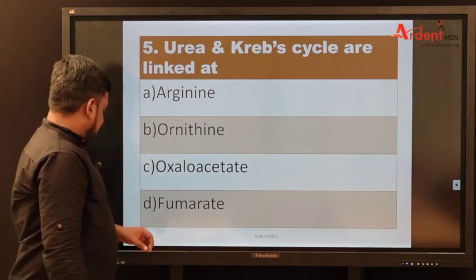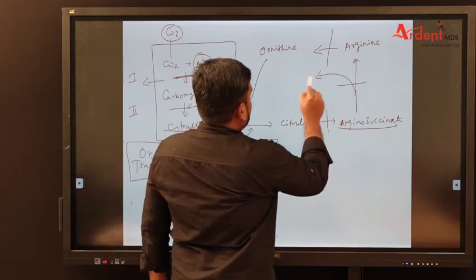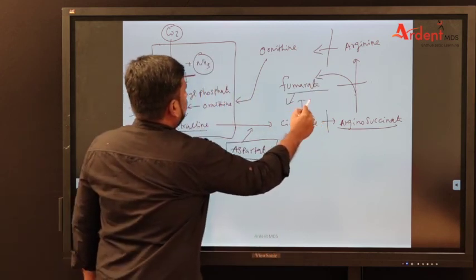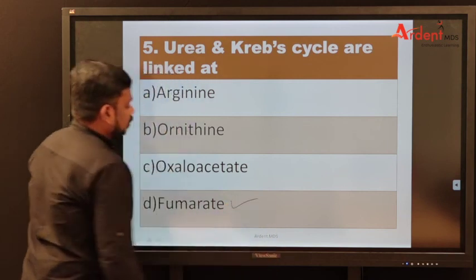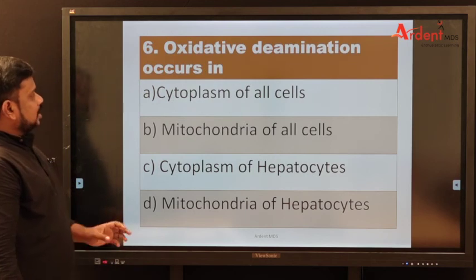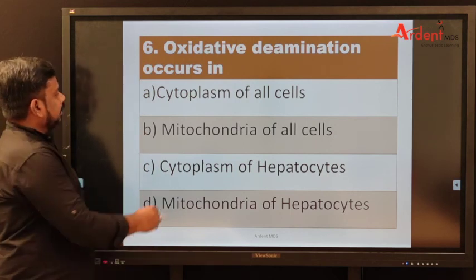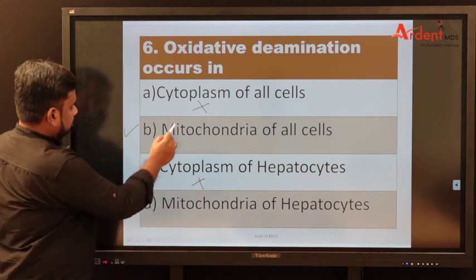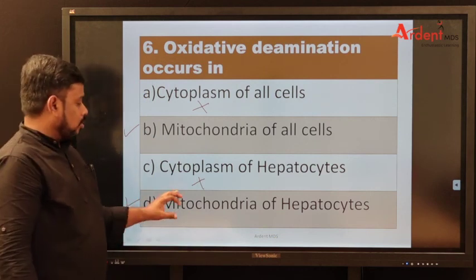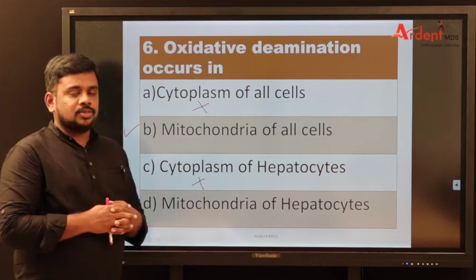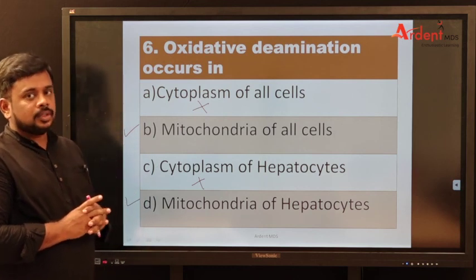Question five: how are the urea cycle and Krebs cycle linked? During the urea cycle, in the synthesis of arginine from arginosuccinate, a molecule called fumarate is formed. This fumarate goes to the TCA cycle, so the answer is fumarate. Question six: oxidative deamination occurs in — deamination occurs in mitochondria. You can eliminate options for cytoplasm. Between options mentioning mitochondria, since deamination occurs only in the liver, the answer is mitochondria of the hepatocytes. Hope this video is helpful for you. If you have any doubts, kindly reach out.